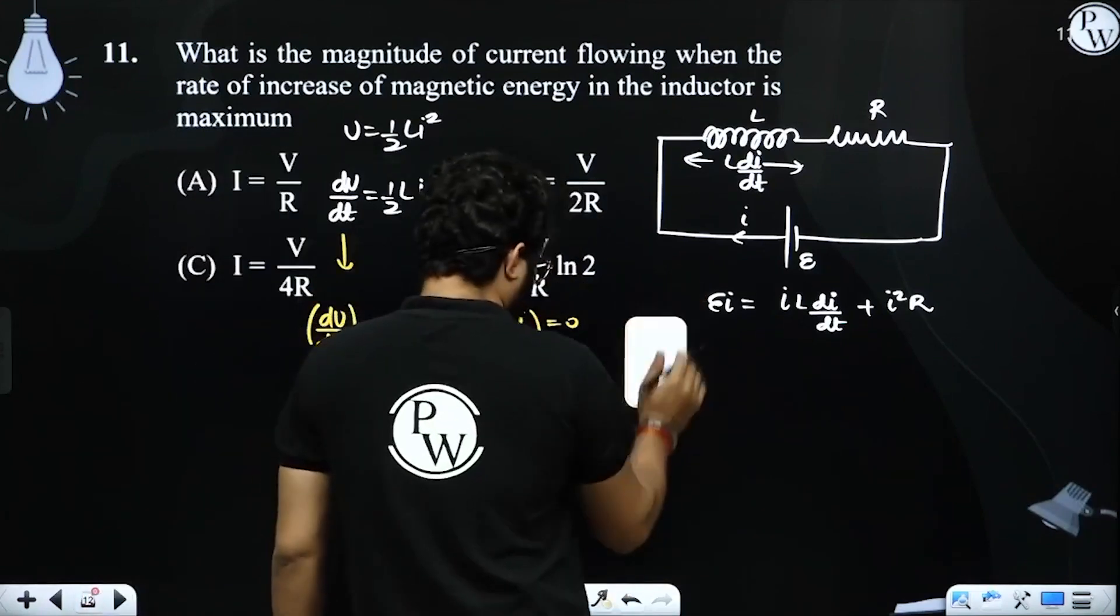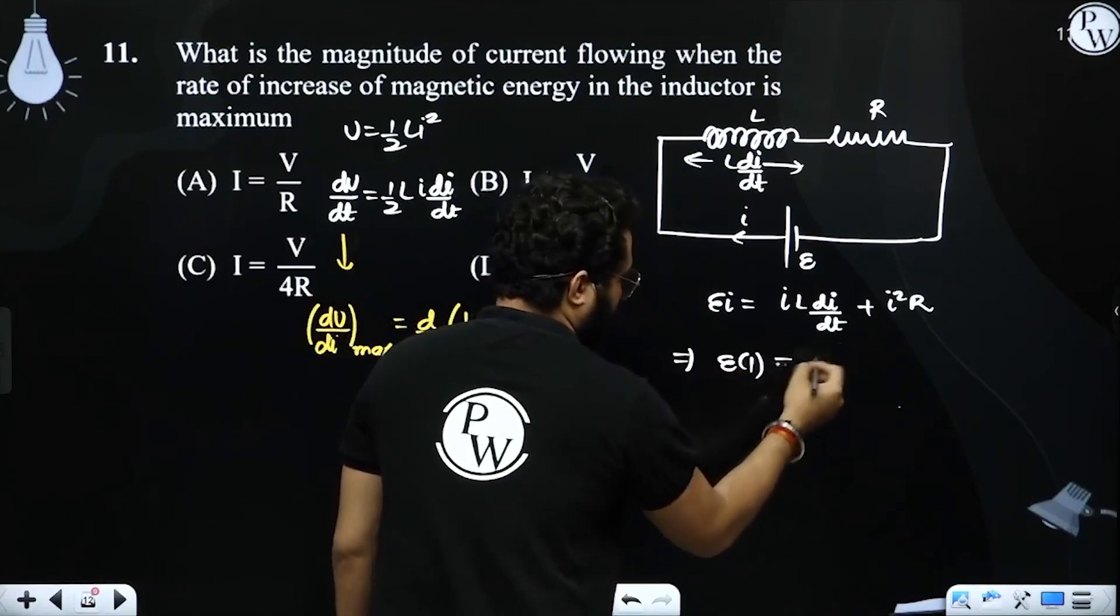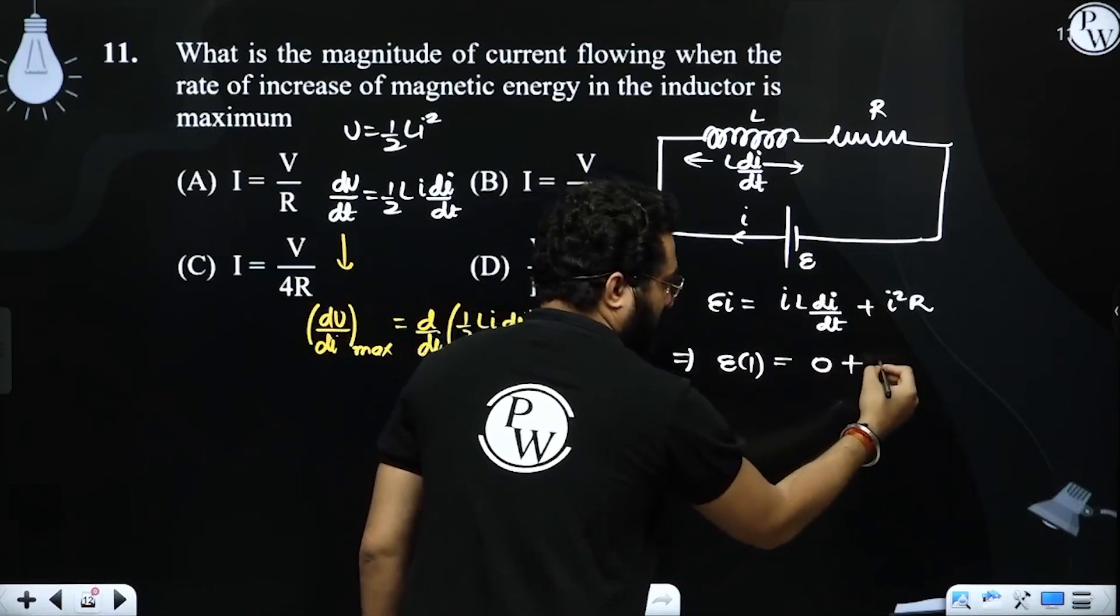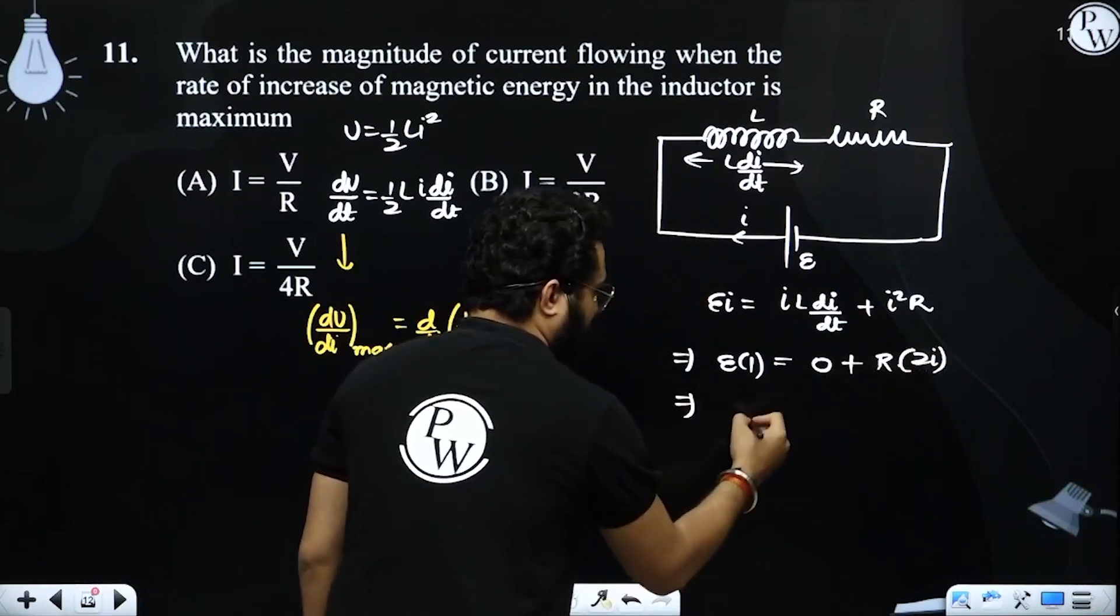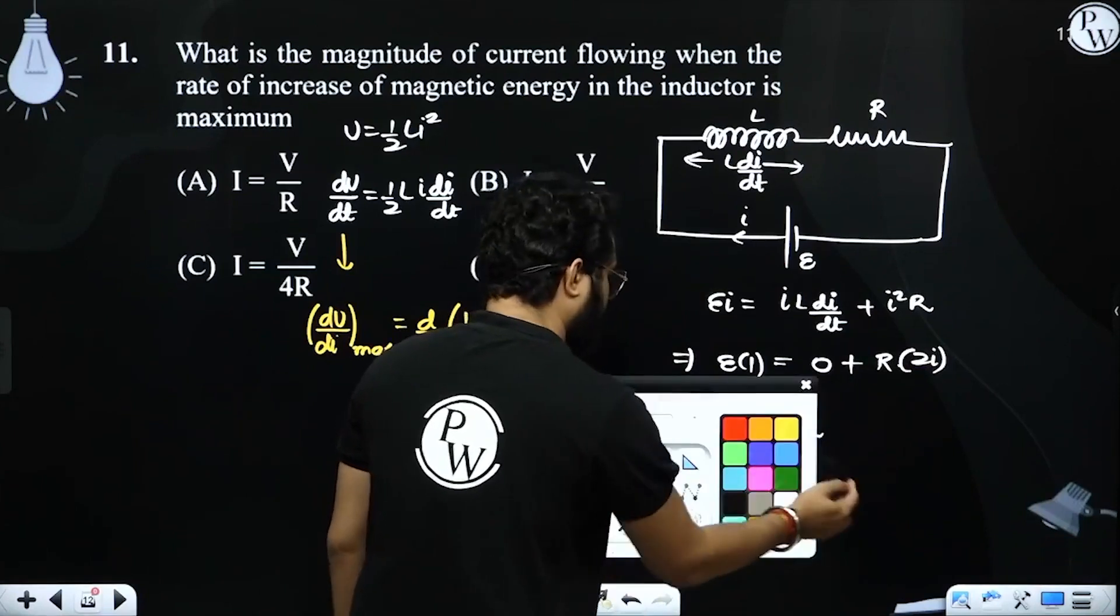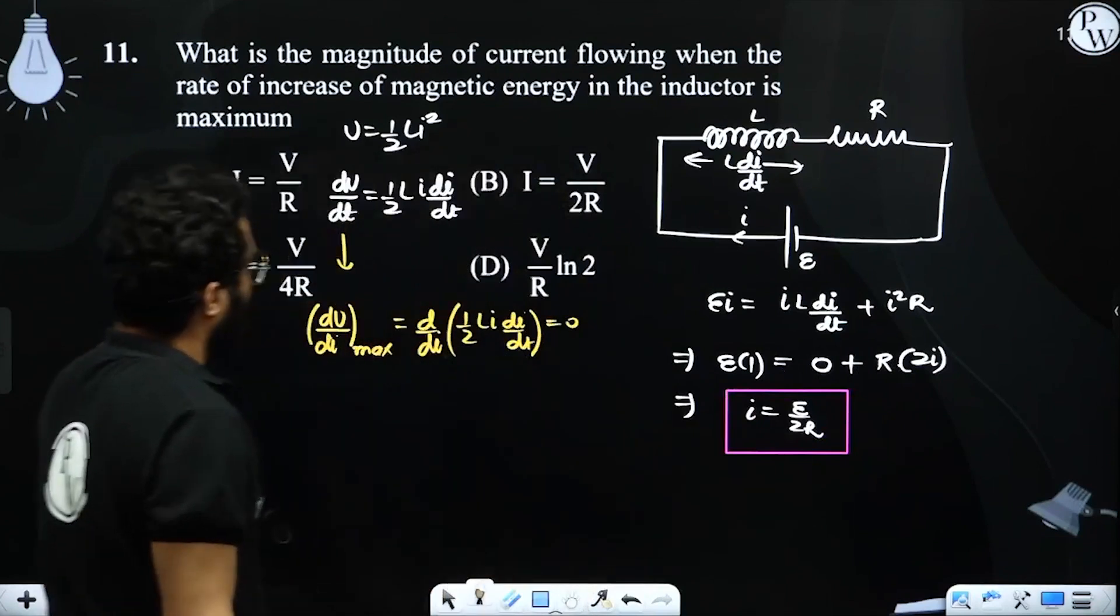So we're doing differentiation with respect to current. So this should become... E di by dt is 1, differentiation for maxima. So this value will become 0, R is constant, and this becomes 2i. So the value of i will be E by 2R.